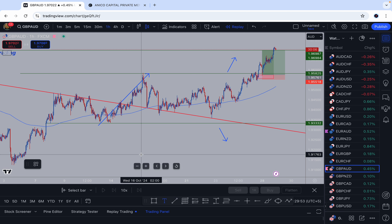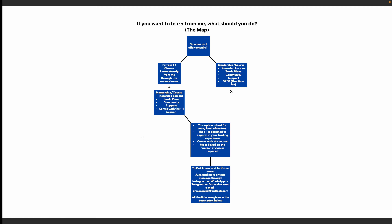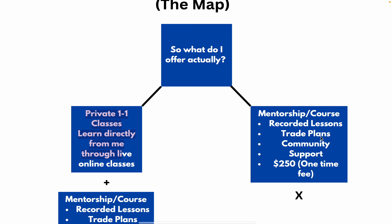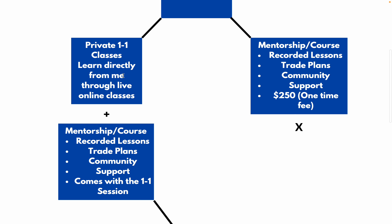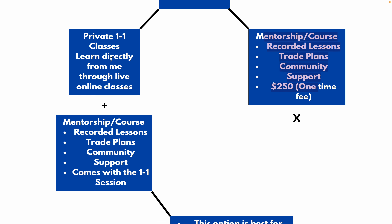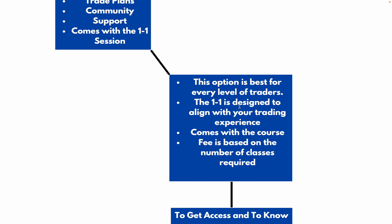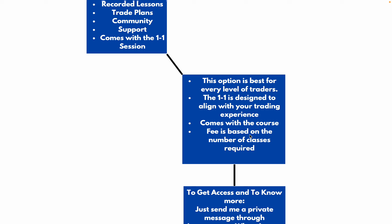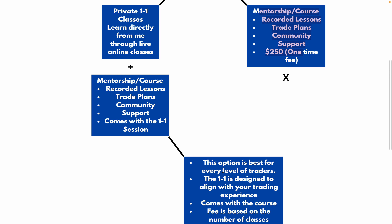Now if you want to learn from me, you can go for my one-on-one session or just buy my course — it's up to you. You can go for my mentorship where I give out regular lessons, trade plans, and community support for a one-time fee of $250 — you pay once and get access for a lifetime. Or you can go for my one-on-one session where you get access to the manuscript for free plus private classes from me. It's designed to work for every level of trader. The fee is higher for this, so you need to contact me first — I have a conversation with you to see if you're the right fit.